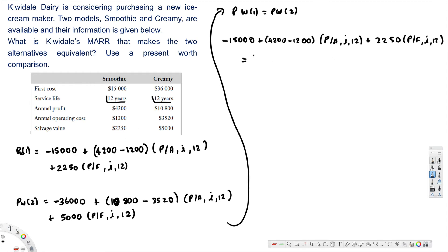...equal to the other side, which is negative $36,000 plus $10,800 minus $3,520, times P/A, i, 12, plus $5,000 times P/F, i, 12.